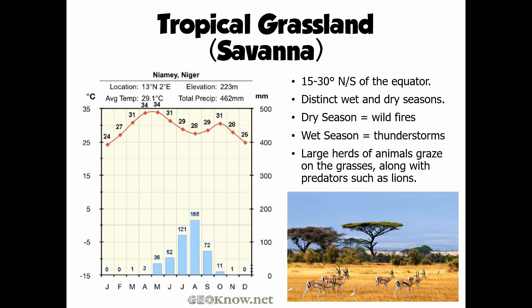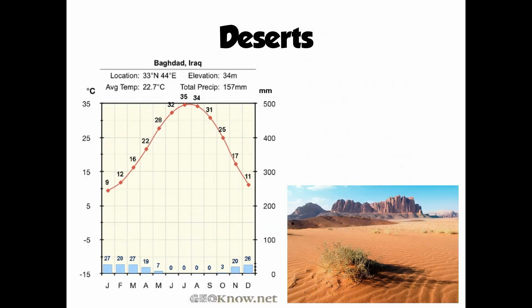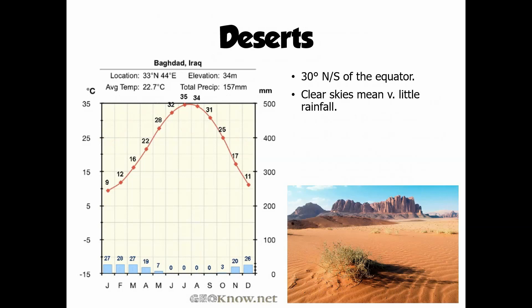Moving a little bit further away from the equator again, we start to encounter a band of deserts across the planet, around 30 degrees north or south of the equator — just on the edges of the savannah. These are very dry, very arid areas. The reason they're so dry is because the skies above the deserts are very clear. Essentially, air is sinking over this latitude from very high up in the atmosphere, and that descending air prevents any clouds from forming.